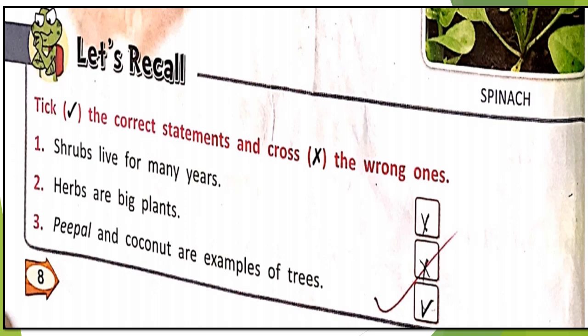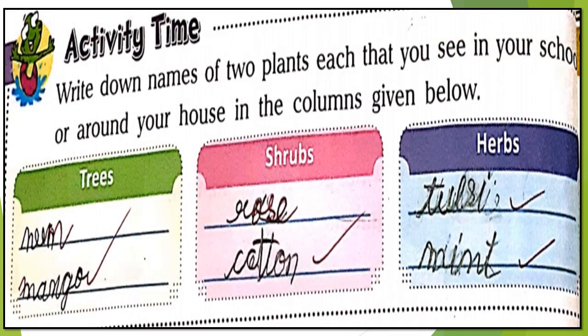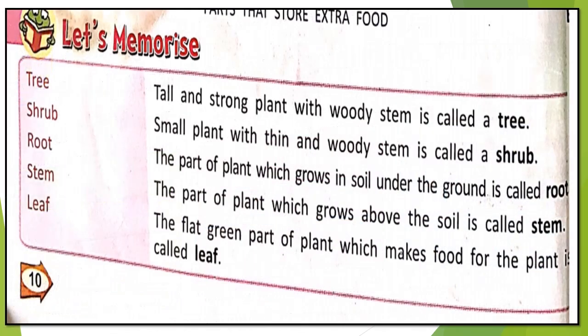On page number 10 there is an activity: write down names of two plants each that you see in your school or around your house. For trees: mango. For shrubs: rose, croton. For herbs: tulsi, mint. You can also write your own examples. There is a 'let's memorize' section — learn about tree, shrub, root, stem, and leaf.